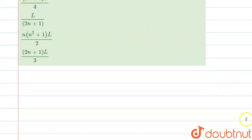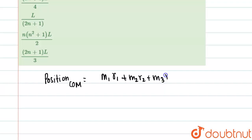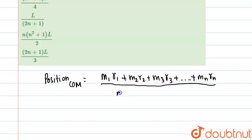We need to find the distance of the center of mass. The center of mass is the point at which the whole mass of the body is concentrated. The formula for the position of center of mass is: m1·r1 + m2·r2 + m3·r3 + ... + mn·rn, divided by m1 + m2 + m3 + ... + mn. This is the formula we are going to follow.